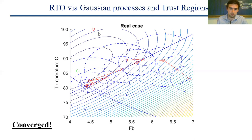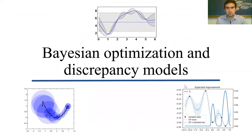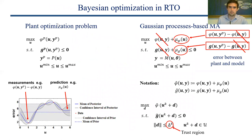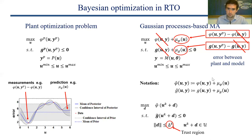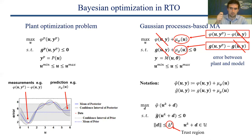Now I'll talk about Bayesian optimization and what we call discrepancy modes. We have the plant optimization problem, and we add the discrepancy term — a Gaussian process — to our model-based problem. Notice that so far I've only used the mean of the Gaussian process. But one of the main advantages of using a GP is taking advantage of the uncertainty term, which tells you how uncertain you are about a prediction given a point. This is quite a powerful tool, particularly in optimization.